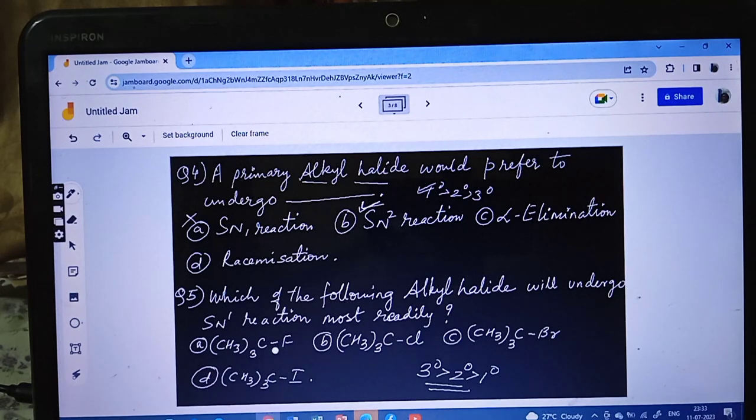Now we have to see whose bond is weakest. I told you, I minus is a better leaving group. So you can see, here C-F, both are small atoms so bond is strong. C-Cl, then C-Br and C-I. When you compare all these three molecules, C and I have large size difference. Size difference is very large and bond dissociation enthalpy will be less. That means this bond will break easily. C-I bond will break easily. When it breaks, we'll get 3 degree carbocation. So your answer should be fifth ka D. Fifth question, option D is correct.